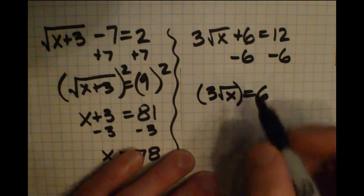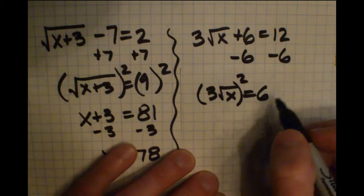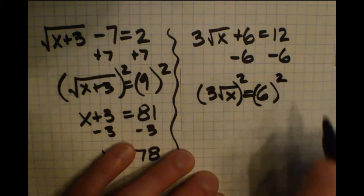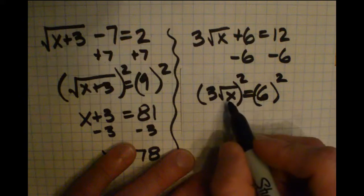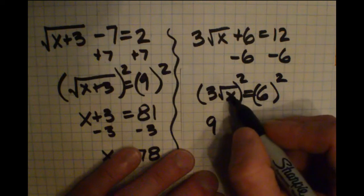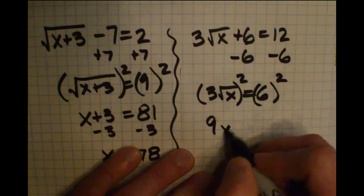If you're squaring the left side, put it in parentheses. You're squaring everything on the left side. Squaring the right side, put it in parentheses. Square everything on that side. On the left side, the 3 is being squared and I have 9. Radical x is being squared and I get x.